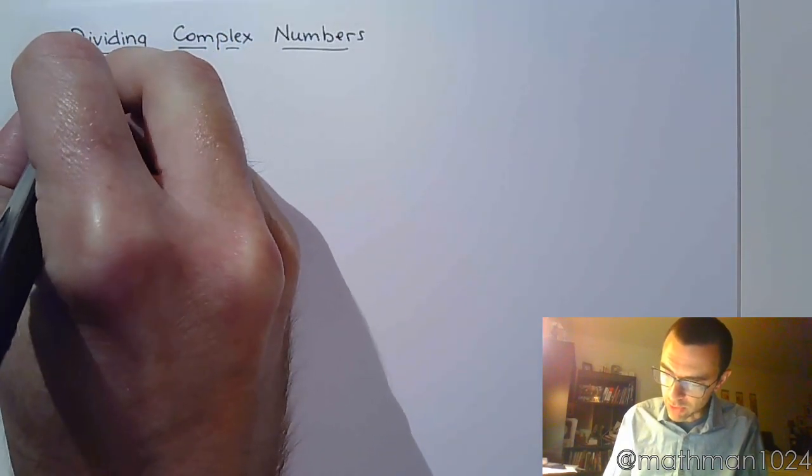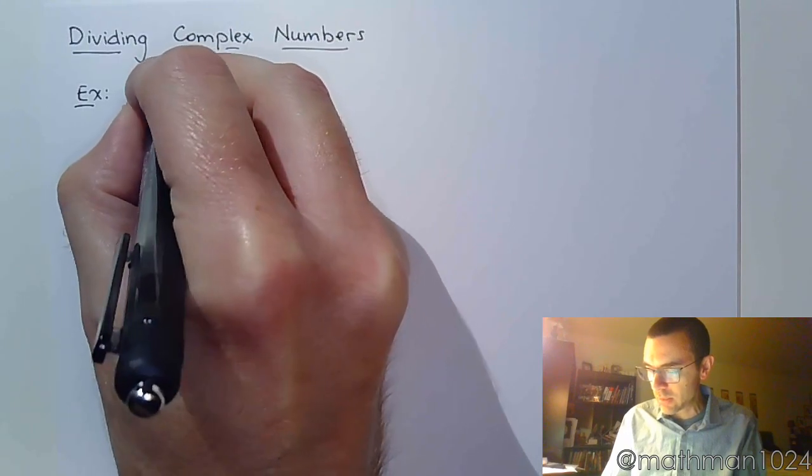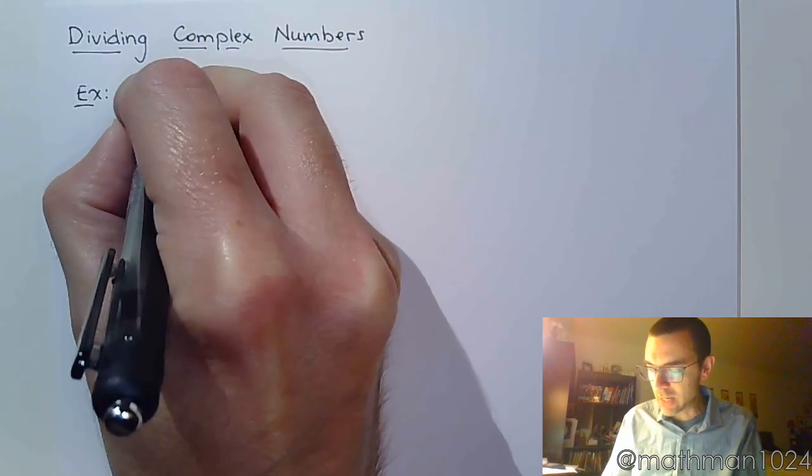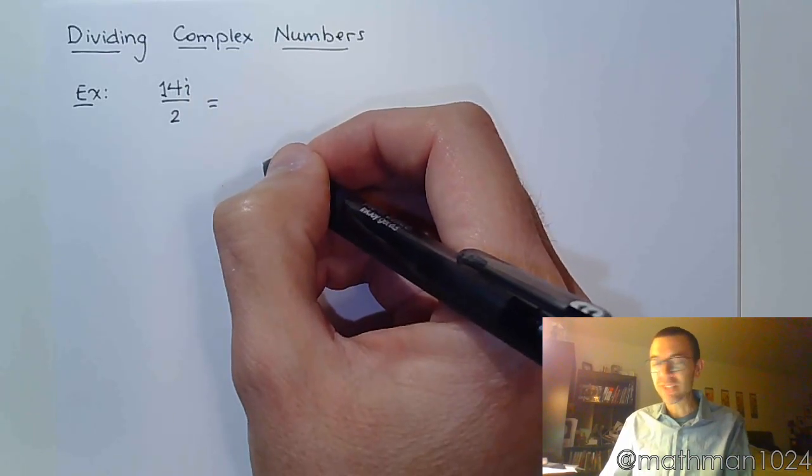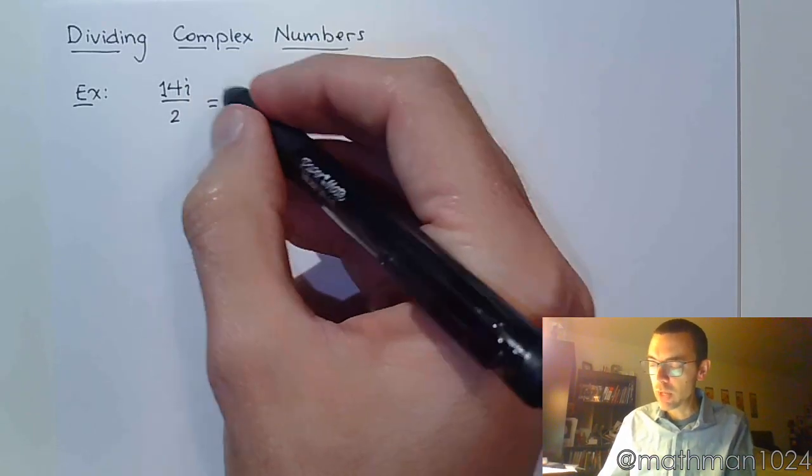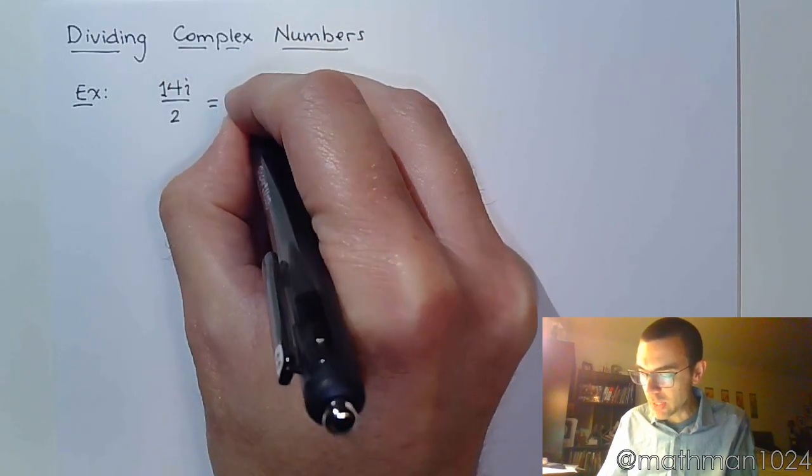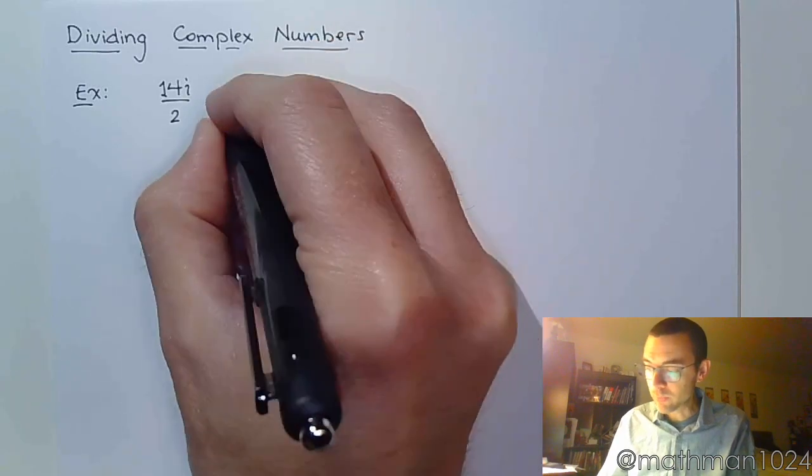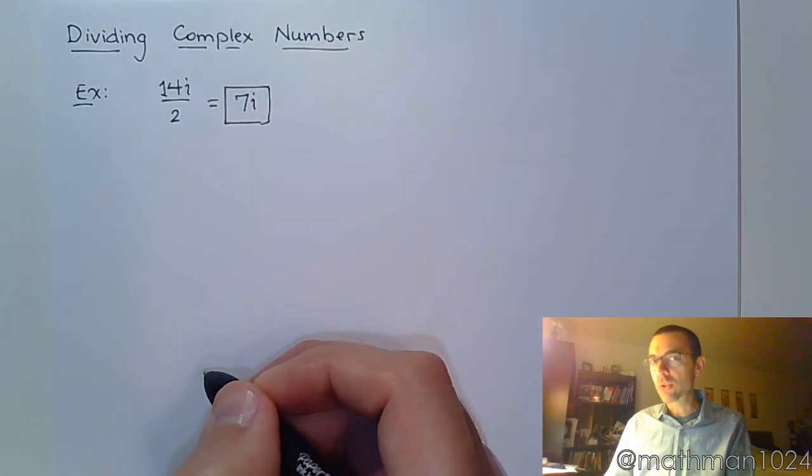So for the most part, there's nothing too crazy going on. So if I take something like 14i divided by 2, I hope we can very quickly see that it's like seeing 14x divided by 2. 14 divided by 2 is just 7, i is in the numerator, and so in the numerator it stays. And that's it. Nothing too crazy about that one.